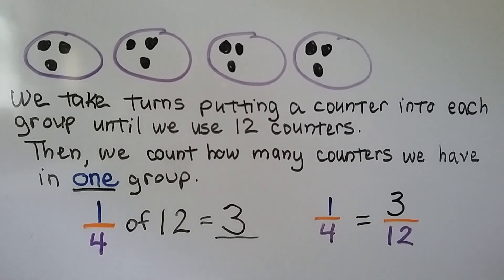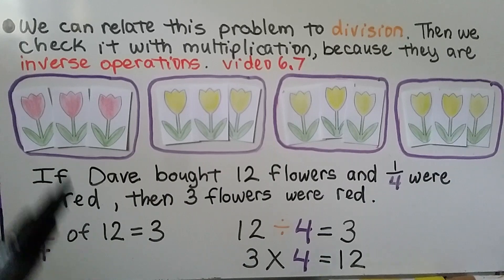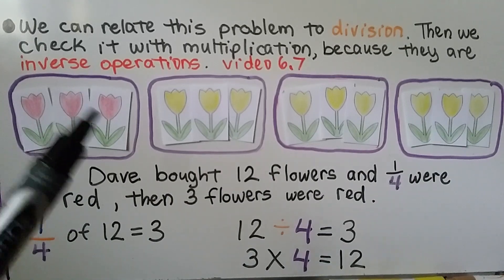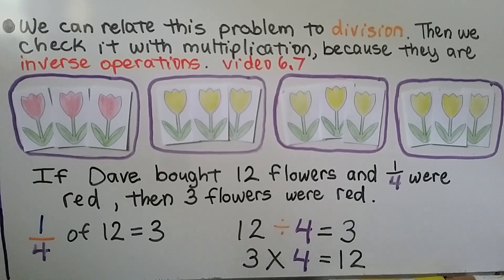These are equal fractions — they're called equivalent fractions. And we'll be talking about that more when we get to chapter nine. So, one fourth of twelve is equal to three. We can relate this problem to division, then check it with multiplication because they are inverse operations. Division and multiplication are opposite operations. We know we had four groups. If he bought twelve flowers and one fourth were red, then that means one of the groups of flowers are red, and we have three red flowers in that group. So, we know one fourth of twelve is equal to three.